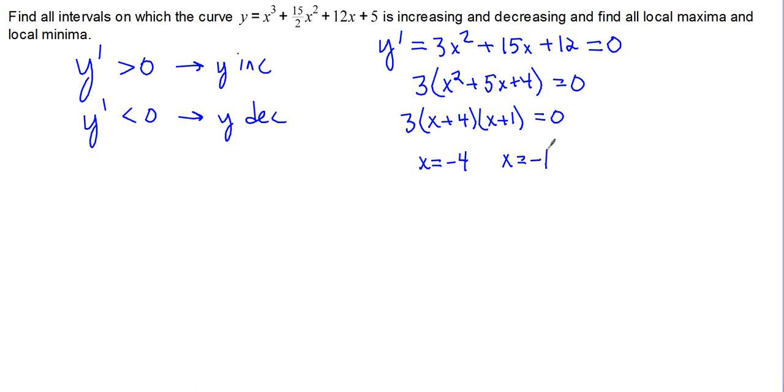So those are the two locations where our derivative could go from positive to negative, or negative to positive. The only way to tell for sure is putting them on a sign chart, or we could use a second derivative test. So we'll do the sign chart first, and then we'll look at the second derivative test.